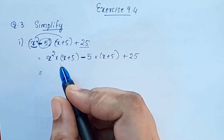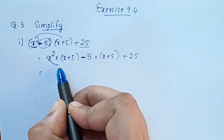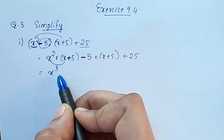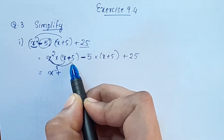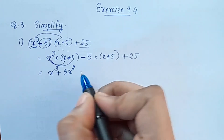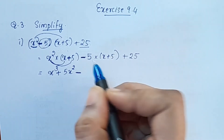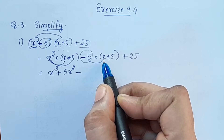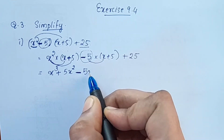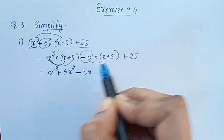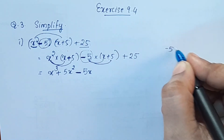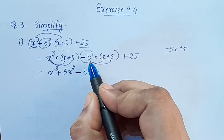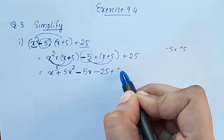This is the first step, this is the second step. Now let's multiply: x² into x is x³. Plus x² into 5 is 5x². This is minus. This is the negative 5. Negative 5 into x is negative 5x. Negative 5 into positive 5 — negative 5 fives are 25, plus 25.